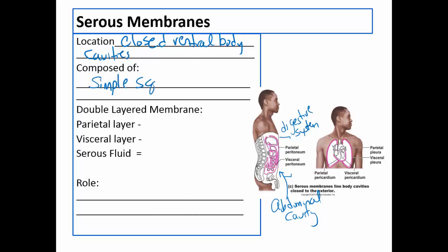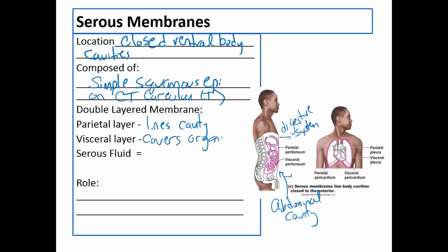Serous membranes are composed of simple squamous epithelium on top of areolar connective tissue. These membranes tend to have two layers. One layer lines the cavity and is called the parietal layer. The other layer covers the organs in the cavity and is called the visceral layer. Going back to the digestive system, the layer lining the cavity is called the parietal peritoneum — 'peritoneum' indicating the abdominal cavity — and the layer covering the digestive organs is called the visceral peritoneum.